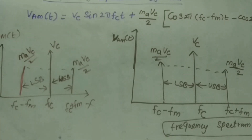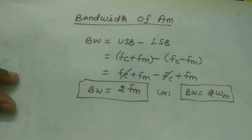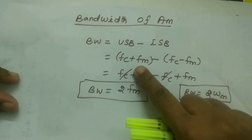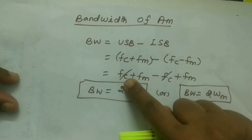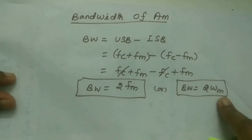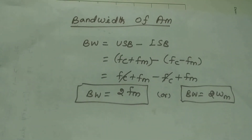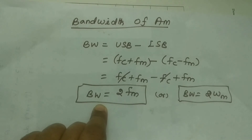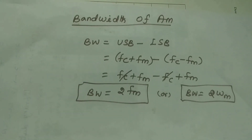Let us see the bandwidth of AM. Bandwidth is nothing but the difference between the upper frequency and the lower frequency. Bandwidth of AM = USB minus LSB = (Fc + Fm) minus (Fc minus Fm). The Fc terms cancel, so the bandwidth is 2Fm or 2 omega_m. The bandwidth is twice the modulating frequency Fm, which means the AM output wave occupies twice the bandwidth of the message signal.